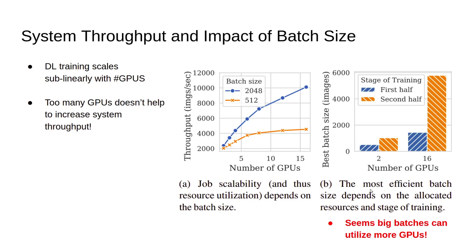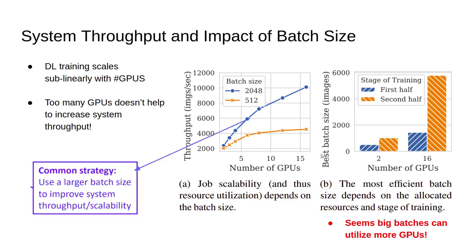The intuition is that bigger batches can utilize more GPUs. However, if you fix the number of GPUs and keep increasing the batch size beyond that, it starts getting slower. If batch size is on the x-axis with GPUs constant, throughput will eventually decrease — so there is an optimal point.